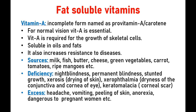Sources of Vitamin A include milk, fish, butter, cheese, green vegetables, carrot, tomato, and ripe mangoes. We can obtain Vitamin A from these sources. If Vitamin A is deficient, it causes night blindness and can lead to permanent blindness. It also causes stunted growth, and xerosis — which is drying of the skin.